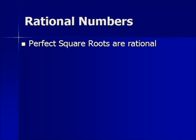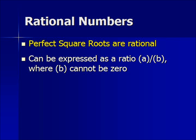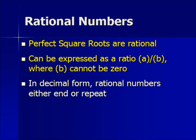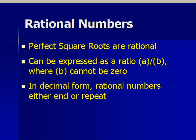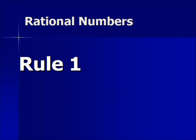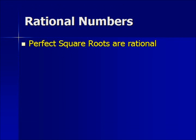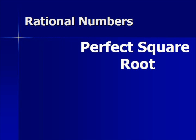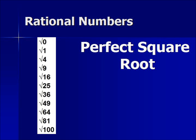To begin, perfect square roots are rational. Rational numbers can be expressed as a ratio A over B, where B cannot be 0. In decimal form, rational numbers either end or they repeat. Let's cover our first rule: perfect square roots are rational. Let's go to our diagram.